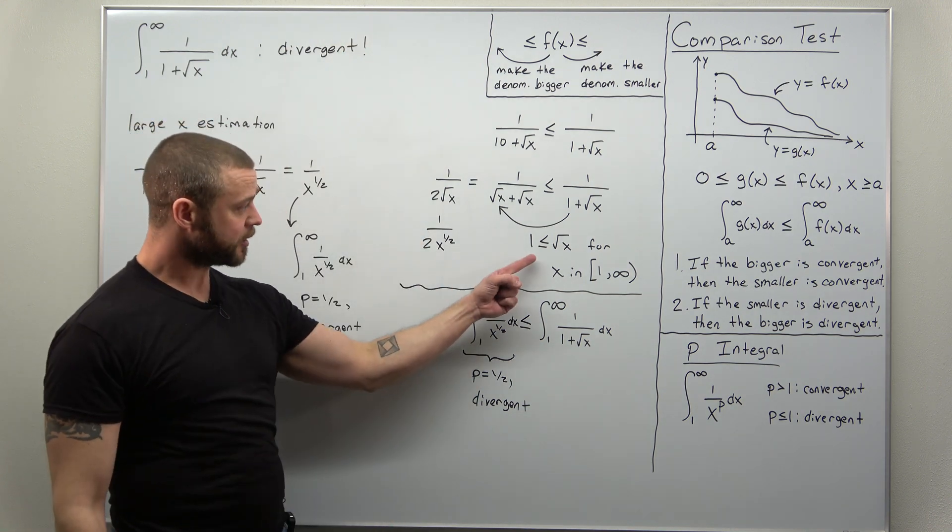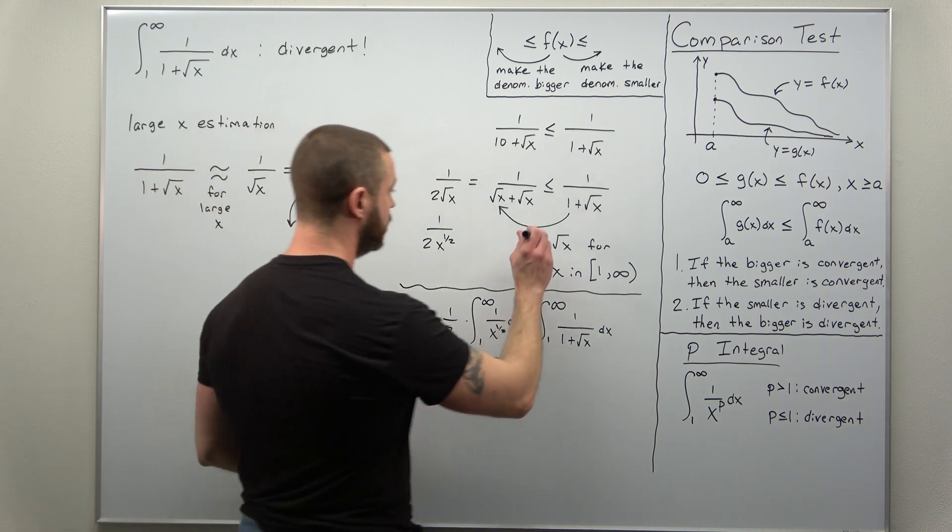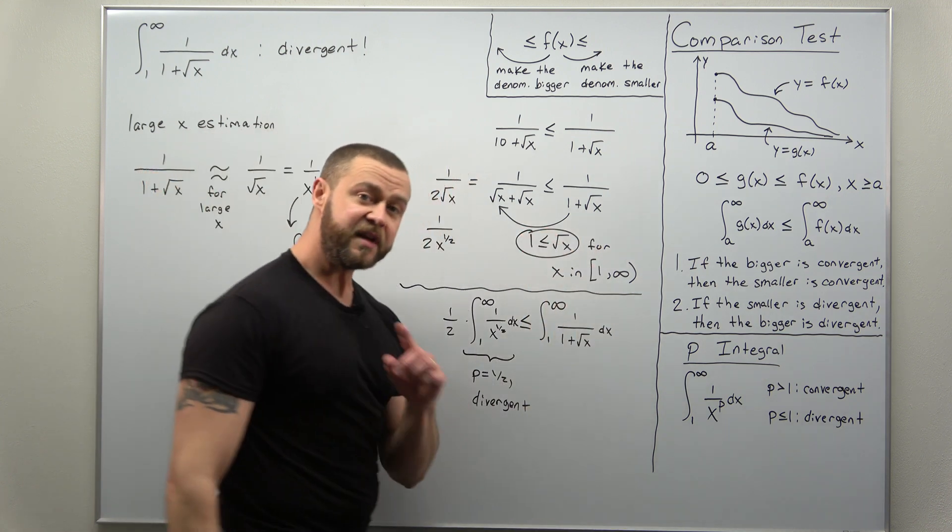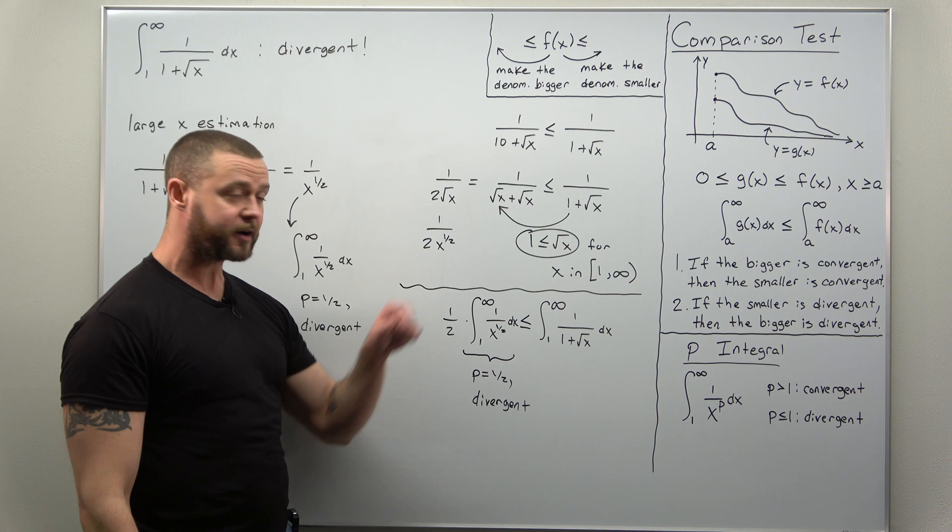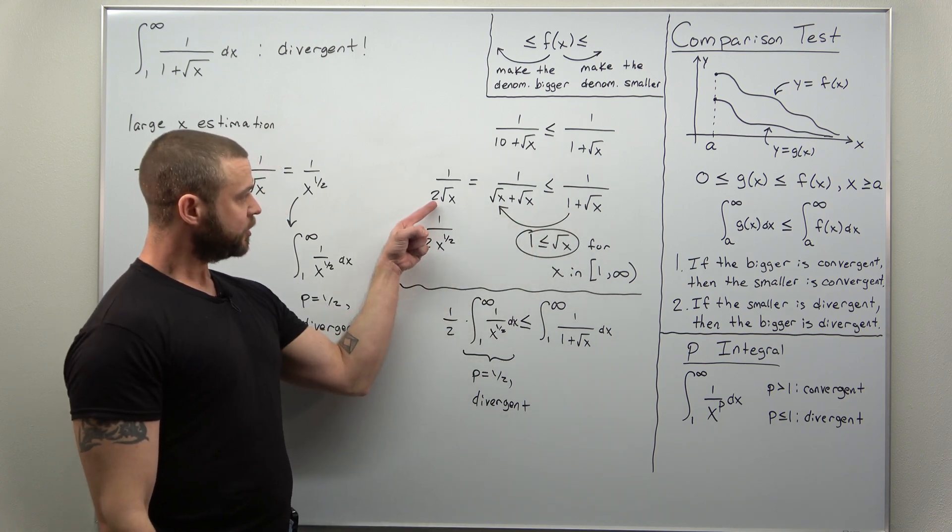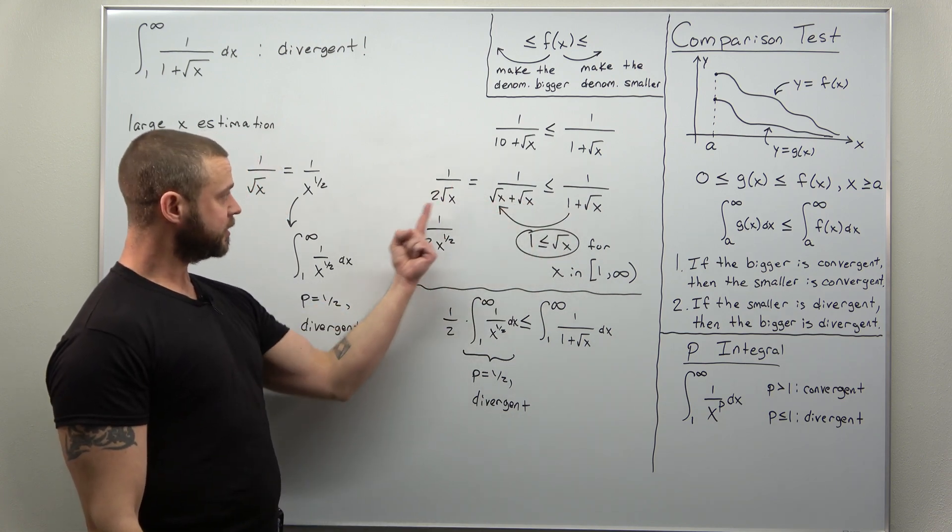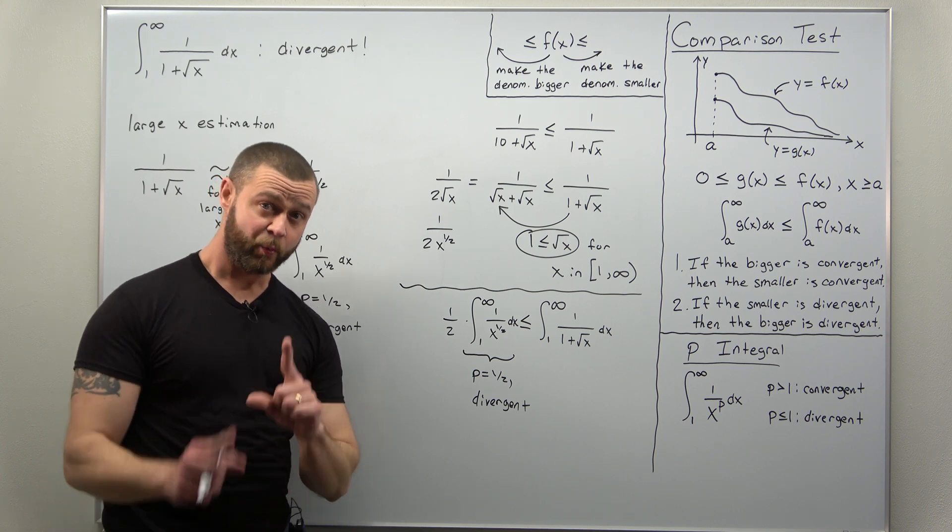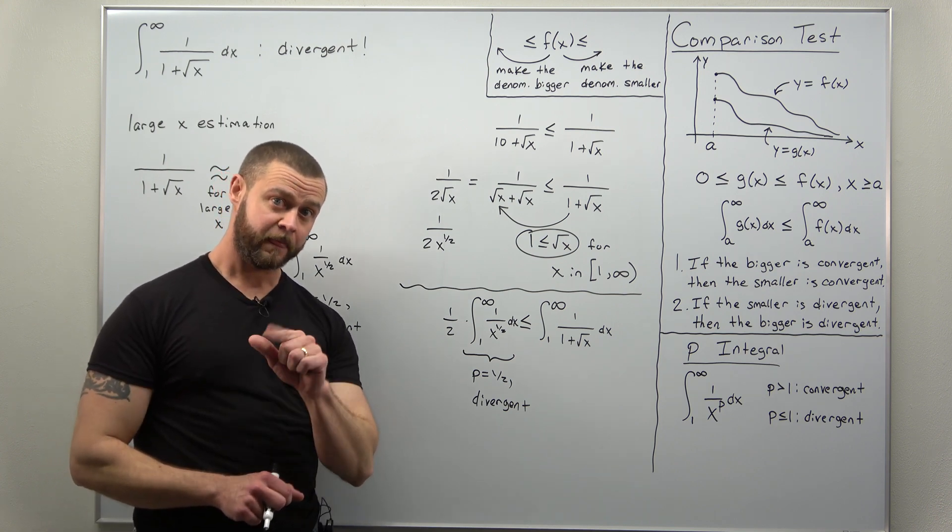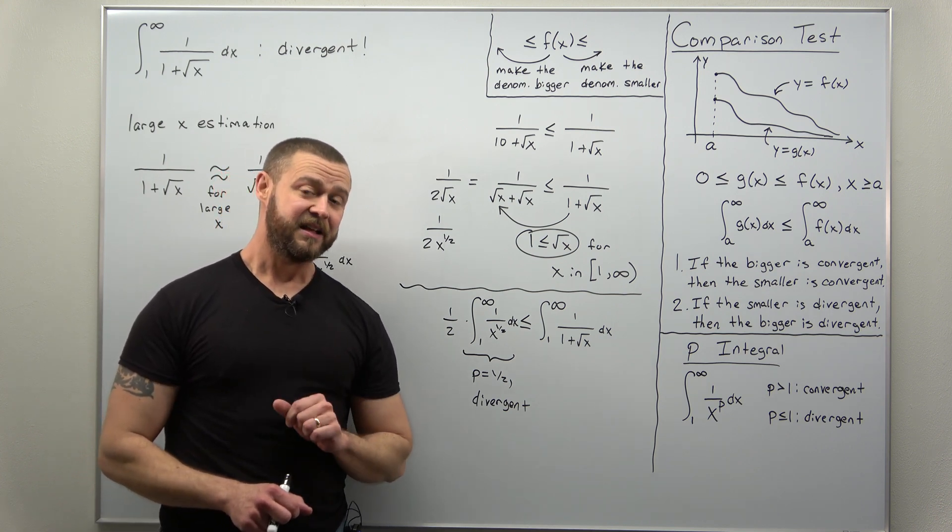The key step here was thinking that square root of x is bigger than one, which allowed us to combine those like terms together to get a comparison with a simple P integral in the case where P is one half.